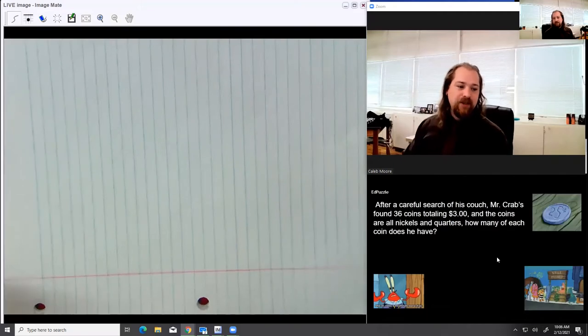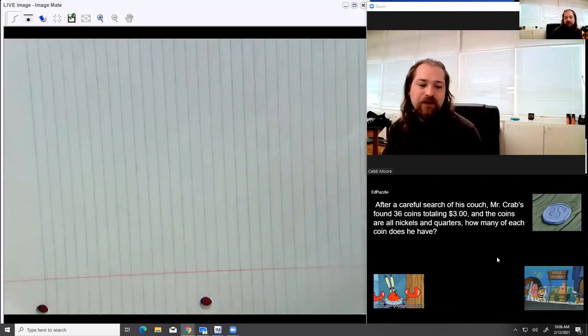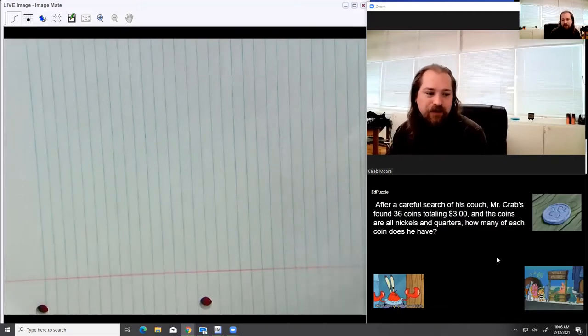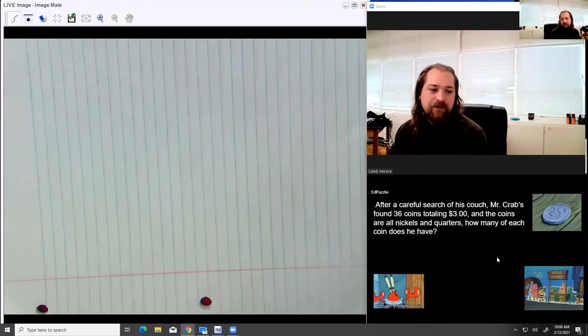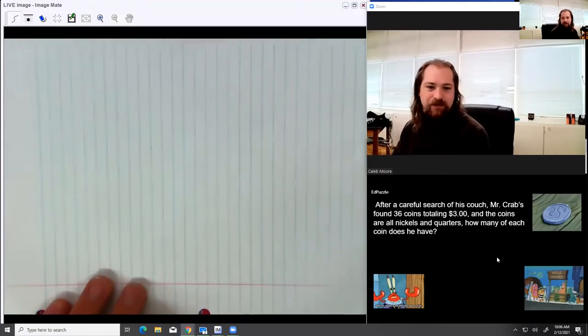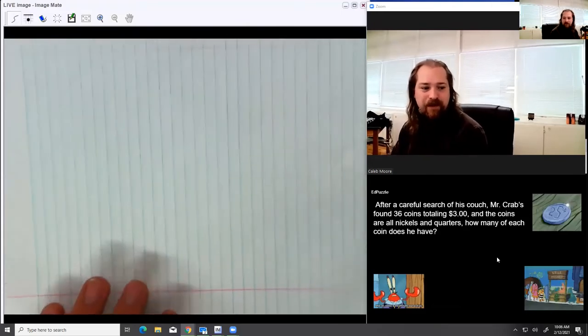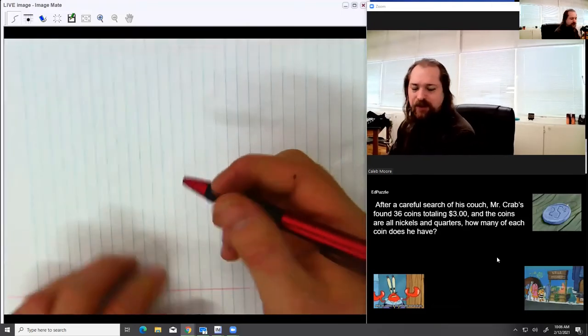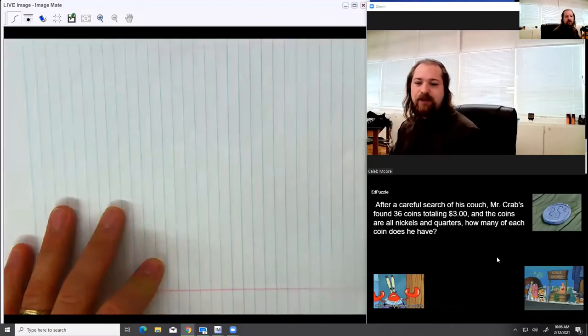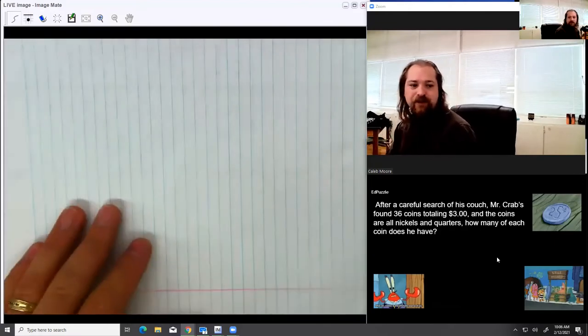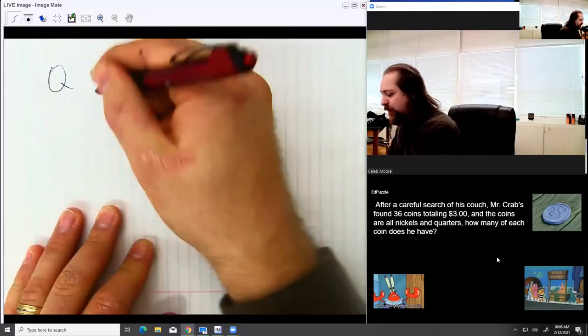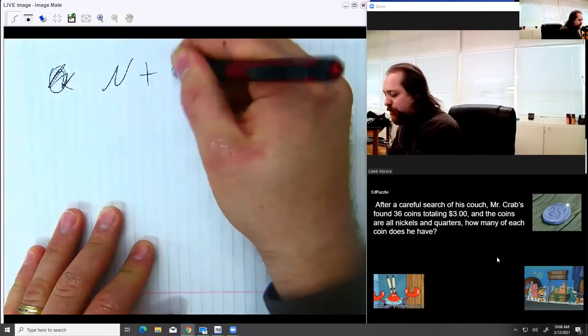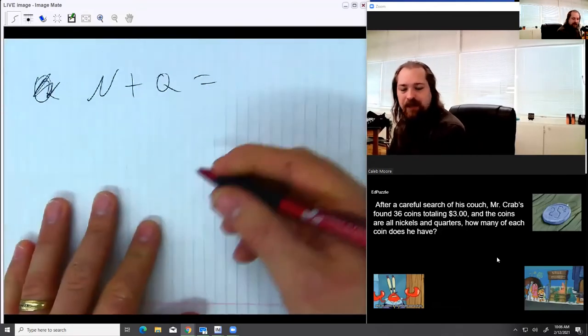I have here, after careful searching of his couch, Mr. Krabs found 36 coins, totaling $3. And the coins are all nickels and quarters. How much of each coin does he have? Of course, Mr. Krabs is the one that would care about this kind of a number. So let's go ahead and dive into it. First of all, we know that we have quarters and nickels. And we know if we add all the quarters and all the nickels together, we're going to get 36 coins. So that's where I'm going to start. Nickels plus quarters equals 36.